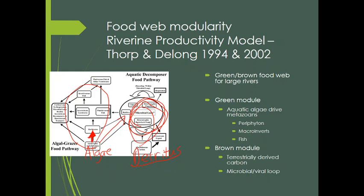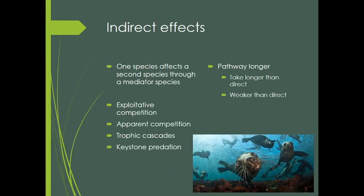That's where we're talking about modularity — and we can see this commonly in the idea of a green and a brown food web in lots of different ecosystems.